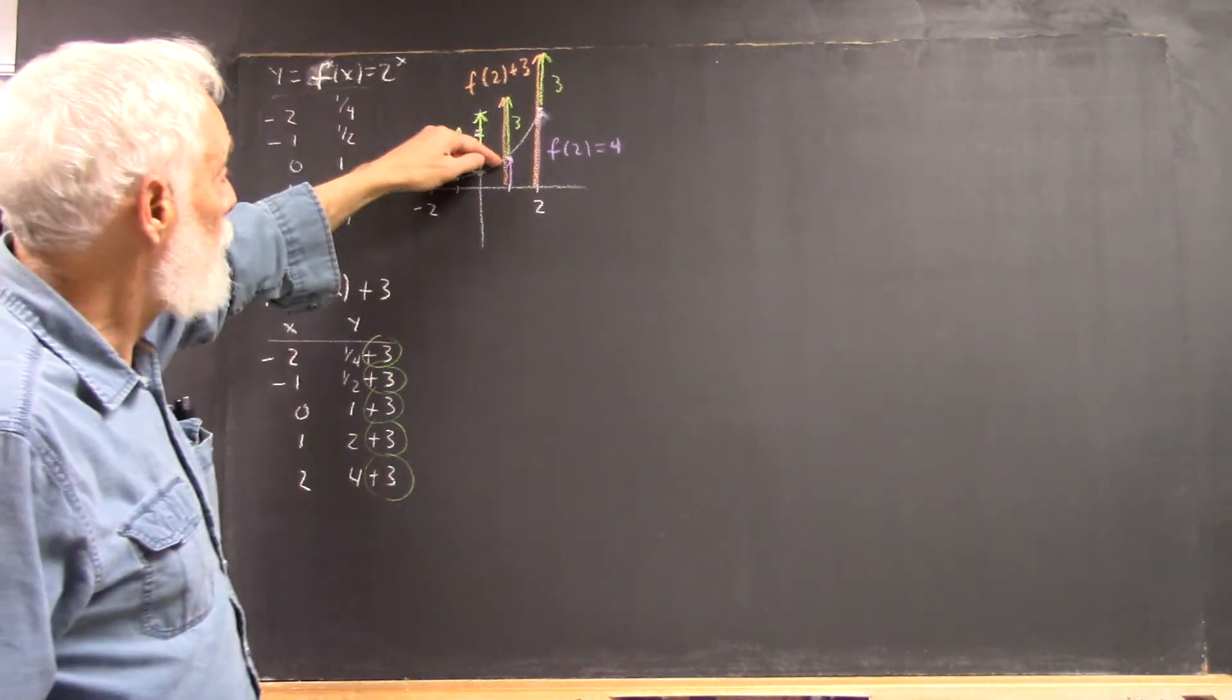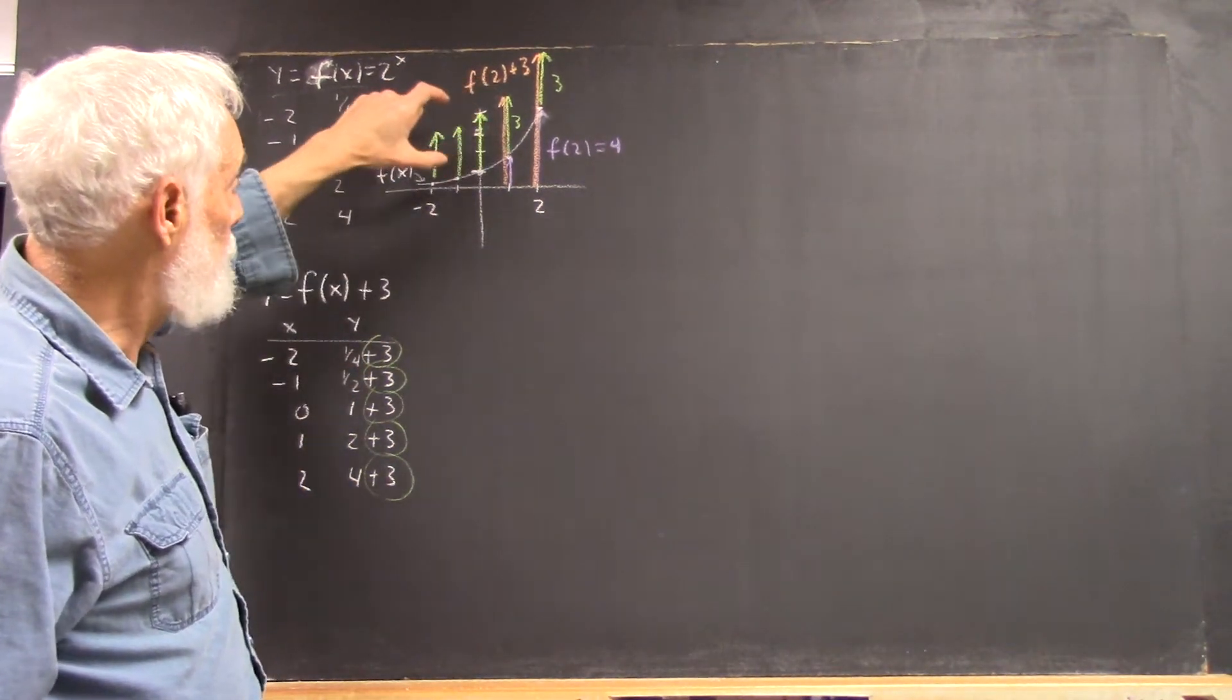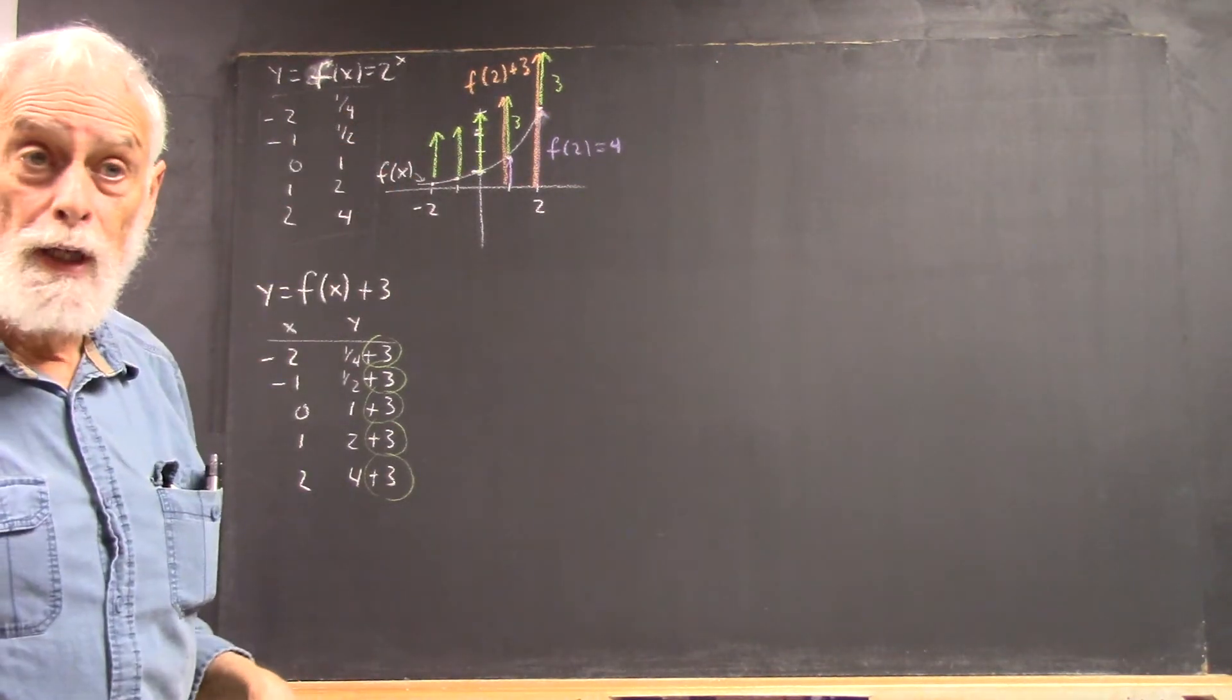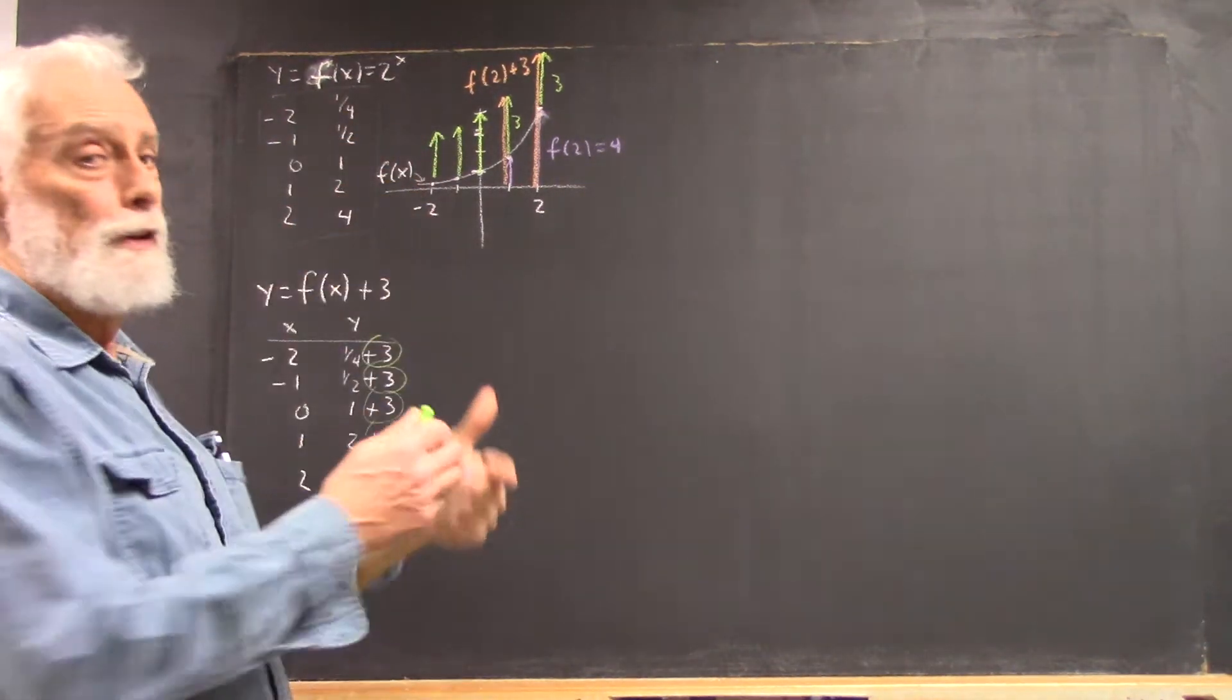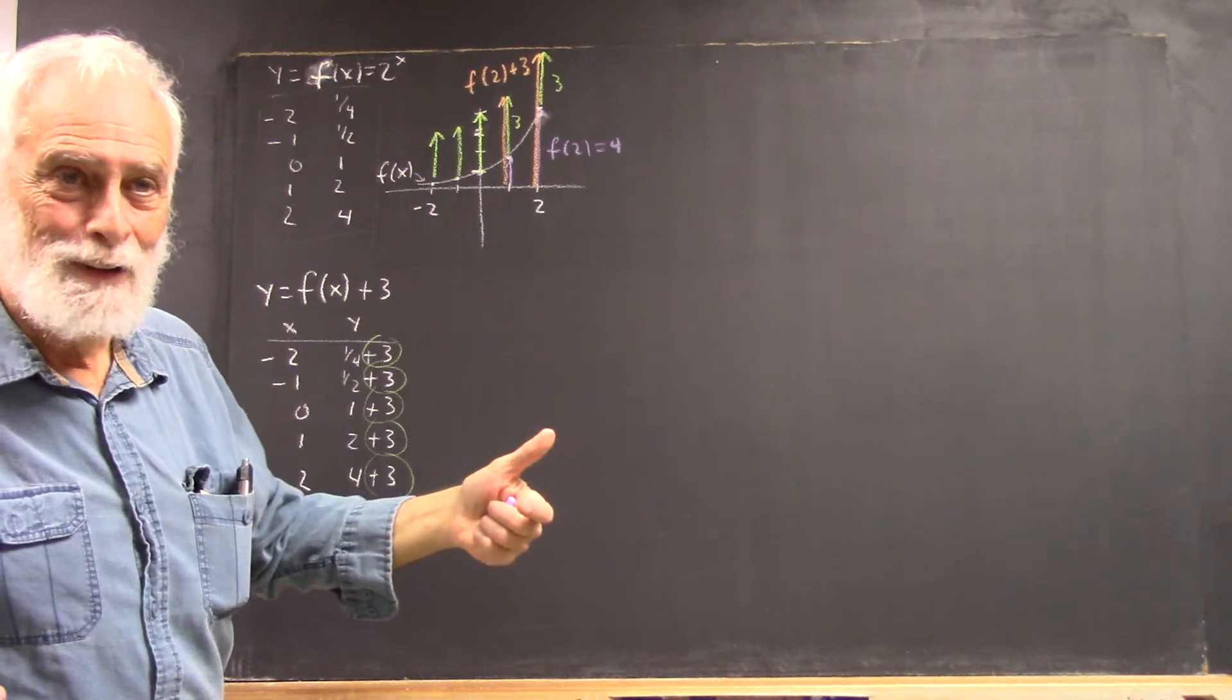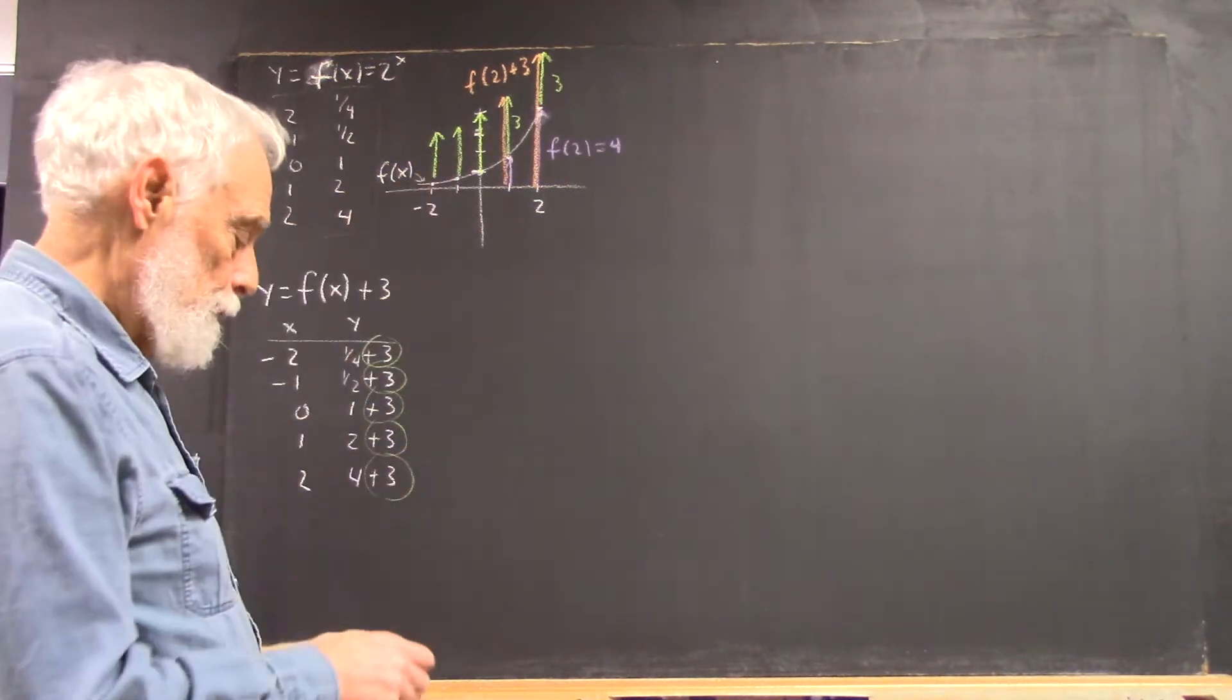We put those together, and we get a point on our f of x plus 3 graph. And we do that for every point. We raise every point up 3 units. Now, I can't do that with every point of this graph because it would all blend together. Okay, so I just do it with selected points.